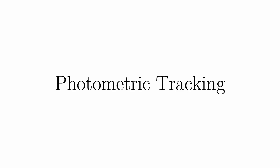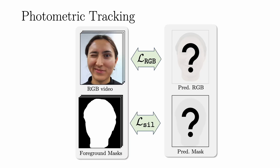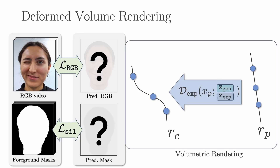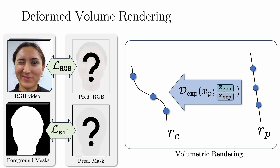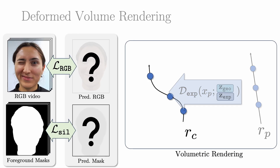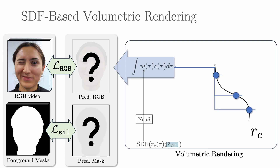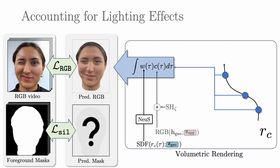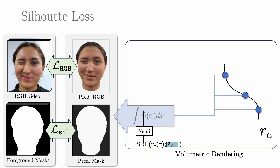To build our photometric tracking, we need a rendering formulation for MonoPHM. Rays in PoE space are backward warped into canonical space. Our rendering builds on the NeuS formulation to transfer predicted SDF values into rendering densities. We include spherical harmonic shading to account for lighting-dependent effects before computing the photometric loss. Additionally, the rendering densities can be used for our silhouette loss.